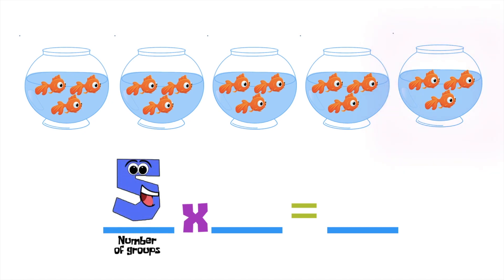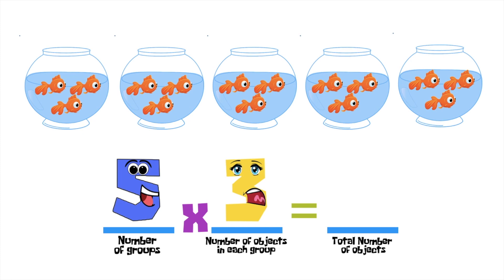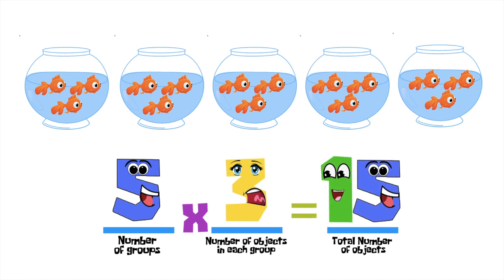Since we have 5 fish bowls, we will have 5 as the number of groups. Then, the second factor stands for the number of objects in each group. How many goldfish do we have in each fish bowl? That's correct — it's 3. So, 5 times 3: what is the total number of goldfish? That's correct — it's 15. So, 5 fish bowls times 3 goldfish in each is equal to 15 goldfish in all.